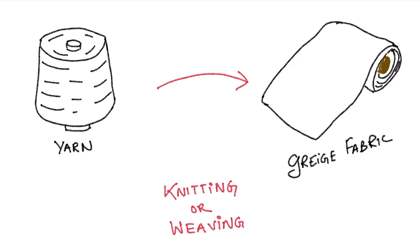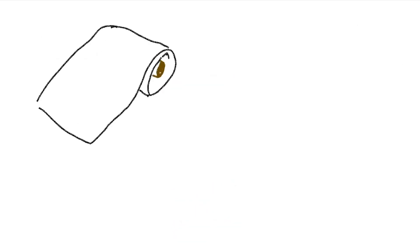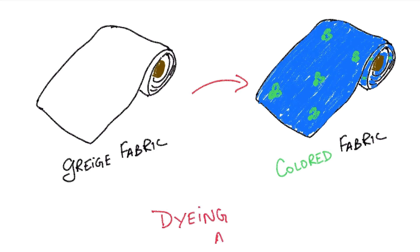At the end of this process we get the raw gray fabric. Then the gray fabric is colored by the process of dyeing and printing. Dyeing is a series of chemical processes by which the dyes are fixed in the cotton fibers in the fabric. By dyeing, the gray fabric is given a solid color throughout. By the process of printing, images or patterns are set on the gray fabric.